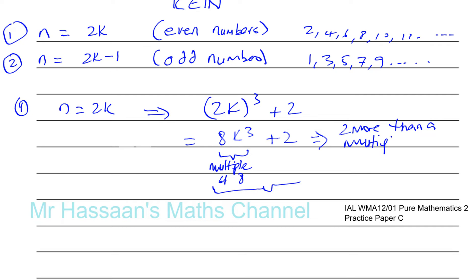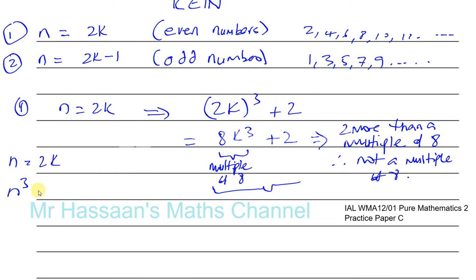Therefore the expression cannot be a multiple of 8, because if it is 2 more than a multiple of 8 it can't itself be a multiple of 8. So when n equals 2k, n cubed plus 2 is not a multiple of 8.